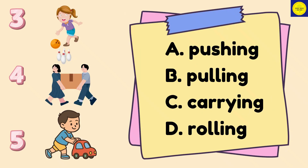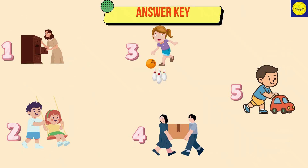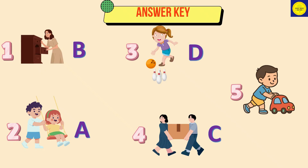Here are numbers 3 to 5. Here are the answers. Number 1, B. Number 2, A. Number 3, D. Number 4, C. And number 5, A.